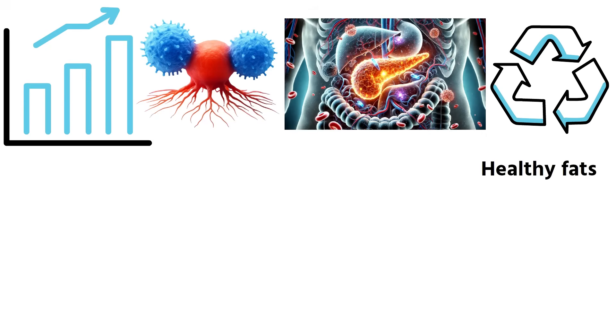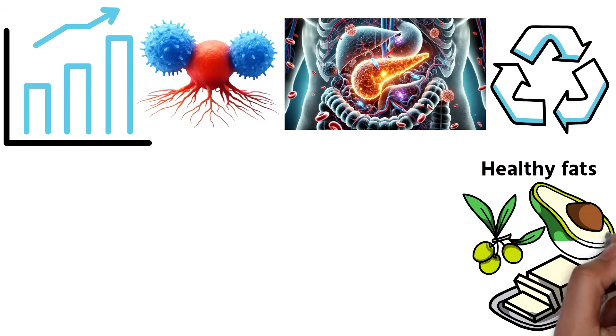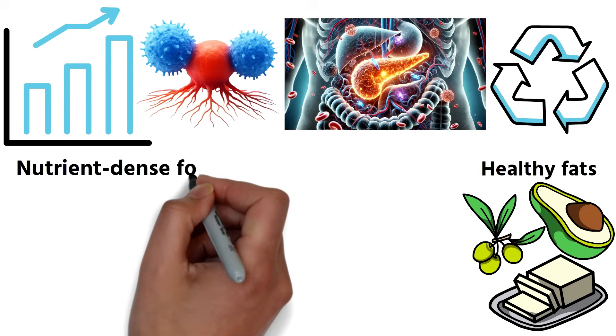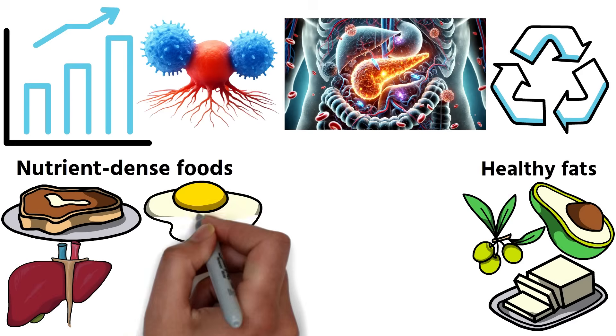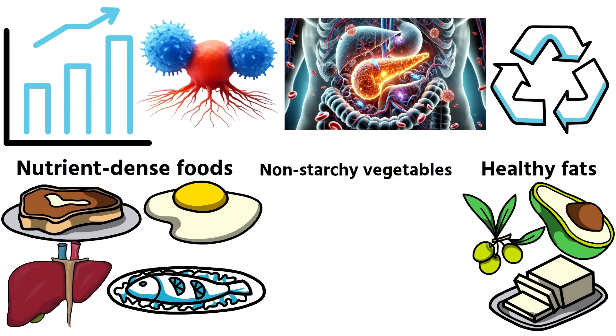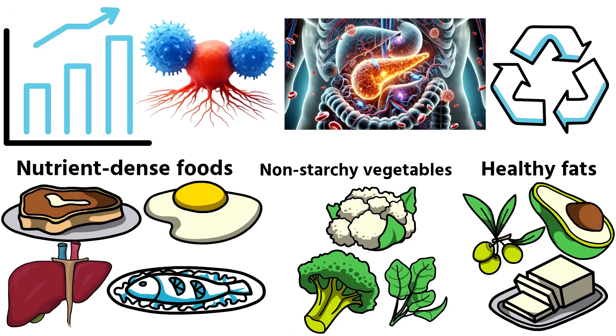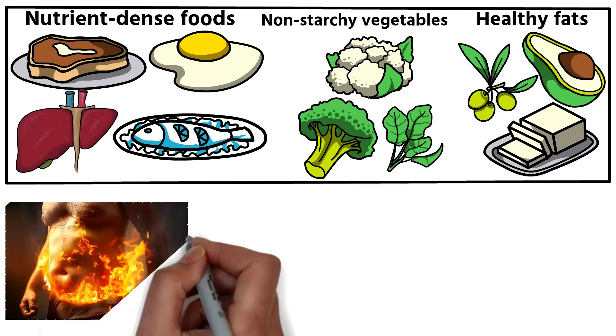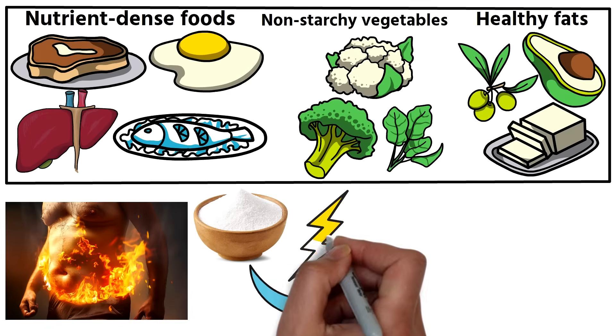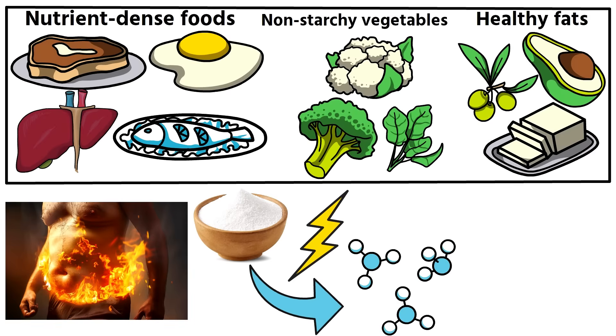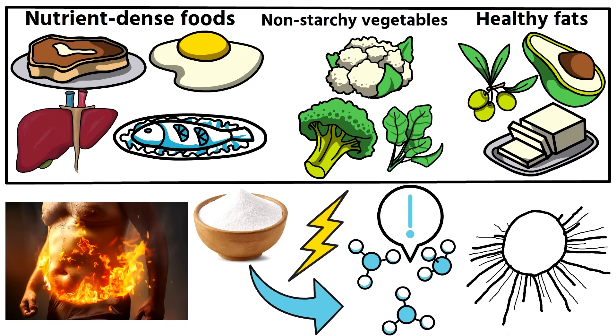Replace them with healthy fats such as butter, olive oil, and avocados. Include nutrient-dense foods like fatty meats, liver, eggs, fish, and non-starchy vegetables such as broccoli, cauliflower, and spinach. This type of eating helps the body transition from burning sugar for energy to burning ketones, a clean, efficient fuel that cancer cells cannot use.